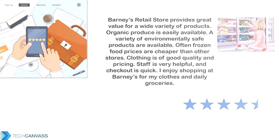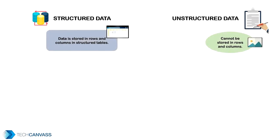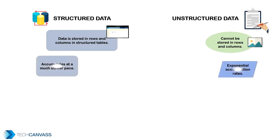Looking at the differences between structured and unstructured data: storing structured data is straightforward in well-defined rows and columns in tables. Because of the variety and ambiguity of format, unstructured data cannot be forced into tables and is stored in specialized databases. Structured data accumulates at a much slower rate — every single day, the bulk of data produced is unstructured, like emails, texts, social media data, and reviews. IDC and Seagate predict that global data will grow to 163 zettabytes by 2025, and the majority of that will be unstructured.